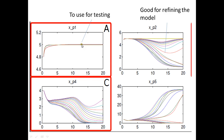This was the core prediction here. XP1 is a good thing to measure if we want to test the model. Whether we measure a core prediction and get a particular value determines whether we reject the model or not. Measuring XP1 means the outcome — whether we reject the model — depends very much on what experimental value we get.